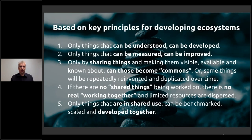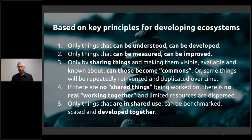Towards the end of the last module we looked at some key principles of ecosystem development — fundamental core rules to keep in mind. Only things that can be understood can be developed, so there is a need for a knowledge component and collective knowledge improvement. Only things that can be measured can be improved, so KPIs and aligning goals are very important. Only by sharing things and making them visible is there an opportunity for co-development to actually come to life and become commons.